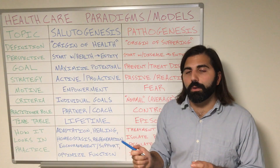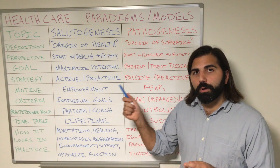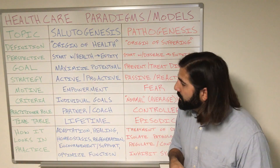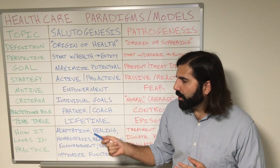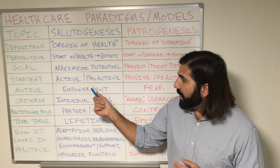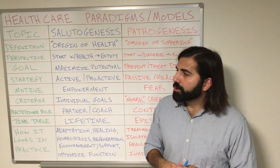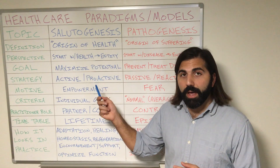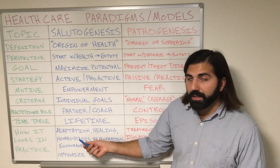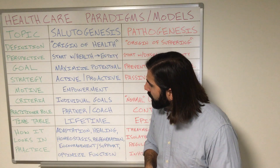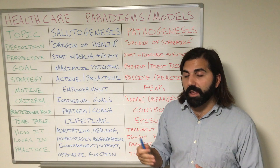Within the salutogenic model you don't ignore average values like blood pressure and heart rate, but you look at the individual person first before you look at the values — you see the person within the values. The role of the practitioner within the salutogenic model is going to be one of being a partner, team member, or coach to help this person reach their individual goals and be active and proactive in their health choices. The timetable of the salutogenic model should really be one used over a lifetime, making proactive health choices and decisions on a day-to-day basis.